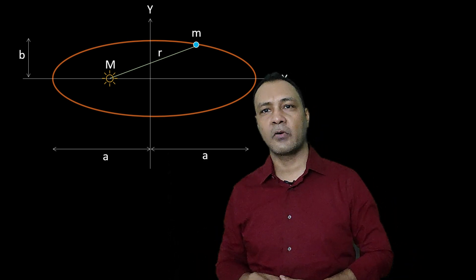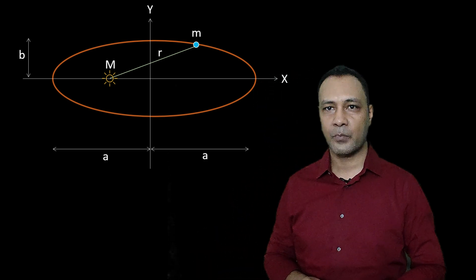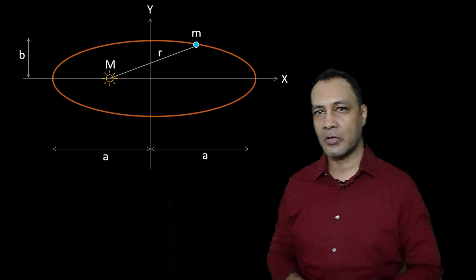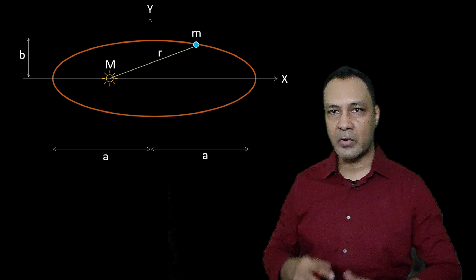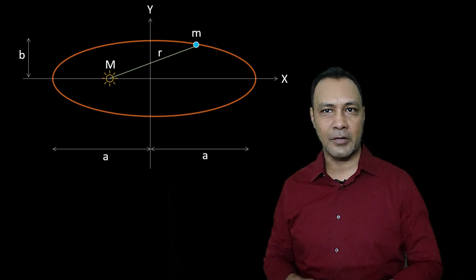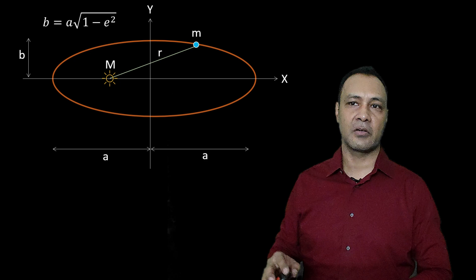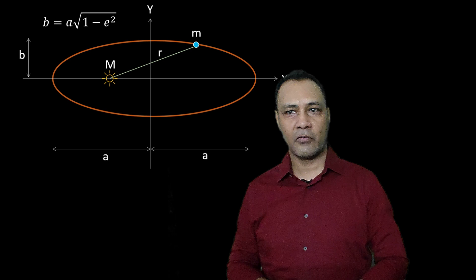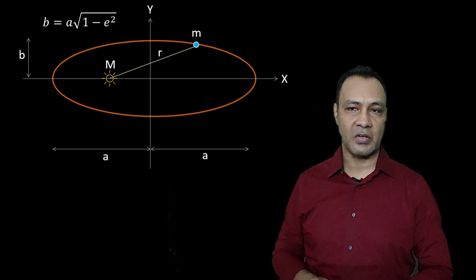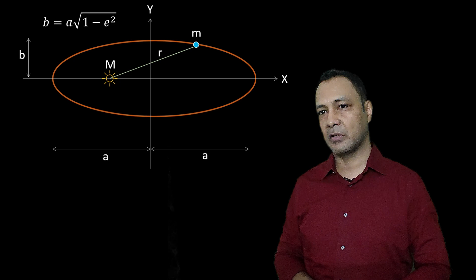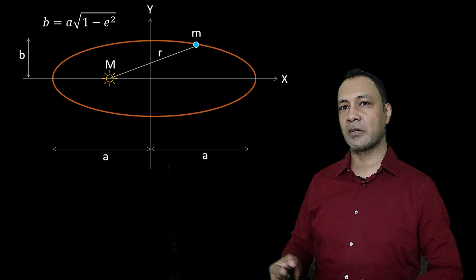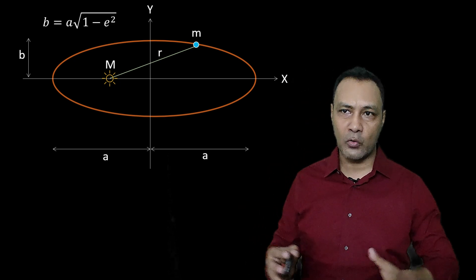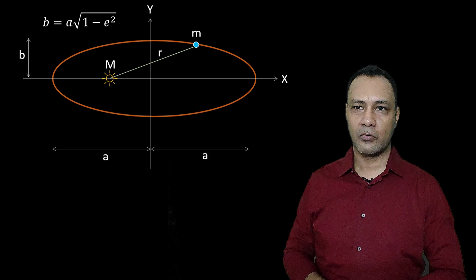The measure of deviation of an ellipse from a circle is called its eccentricity E. The equation of this ellipse is x² / A² + y² / B² = 1. The eccentricity is given by the relation B = A × √(1 − E²). You can see that if we put E equal to 0, B becomes A — meaning the semi-major and semi-minor axes become equal, and that becomes a perfect circle.